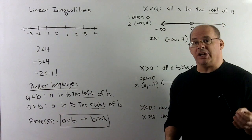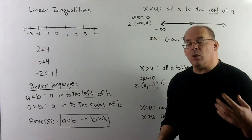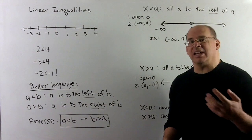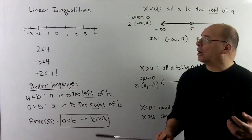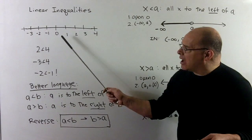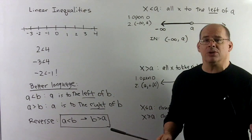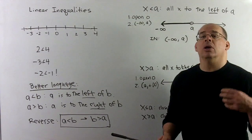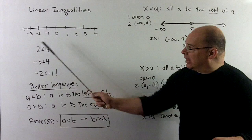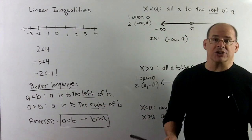Now we consider the subject of linear inequalities. With linear equalities, the work is to isolate x to get a number. Here, instead of an equal sign, we'll have a less than, greater than, less than or equal, or greater than or equal sign. We isolate x, and what comes out is going to be a region on the real number line — a half line in either direction.